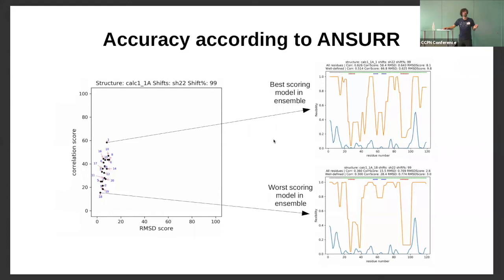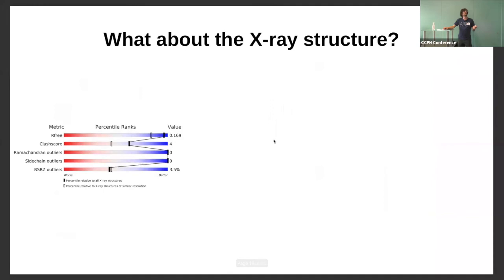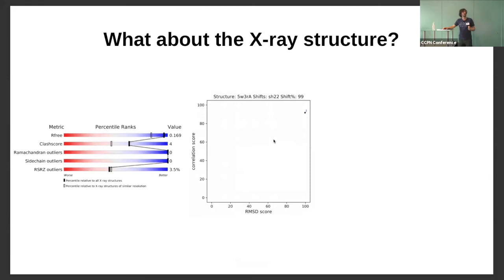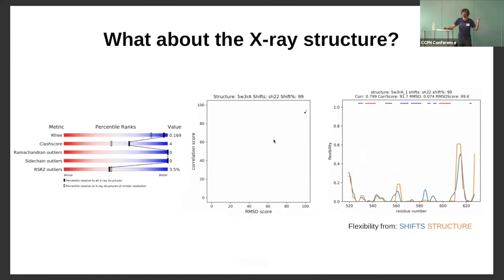Before drilling into it, let's look at the X-ray structure, because ANSWER works for X-ray structures so long as you've got your chemical shifts. The X-ray structure was published in 2017 — it's not by us, it has a very nice R-free value and lovely geometry. ANSWER agrees: it scores in the top right-hand corner, very nicely according to both scores. Looking at the underlying data, the flexibility computed from the model matches the flexibility from the shifts very much better than any of our NMR models.